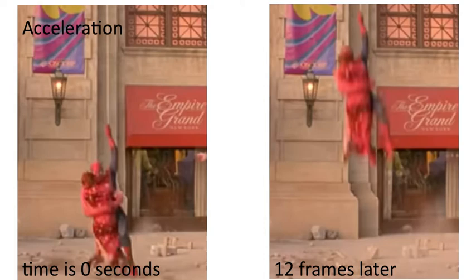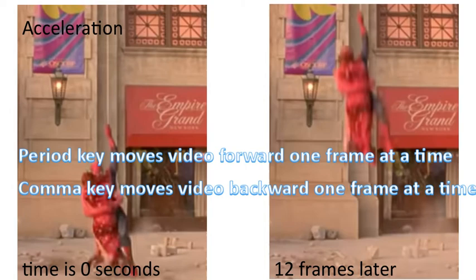To do this using YouTube, you use the period key and the comma key. The period key will move the video forward one frame at a time, and the comma key moves the video backward one frame at a time.